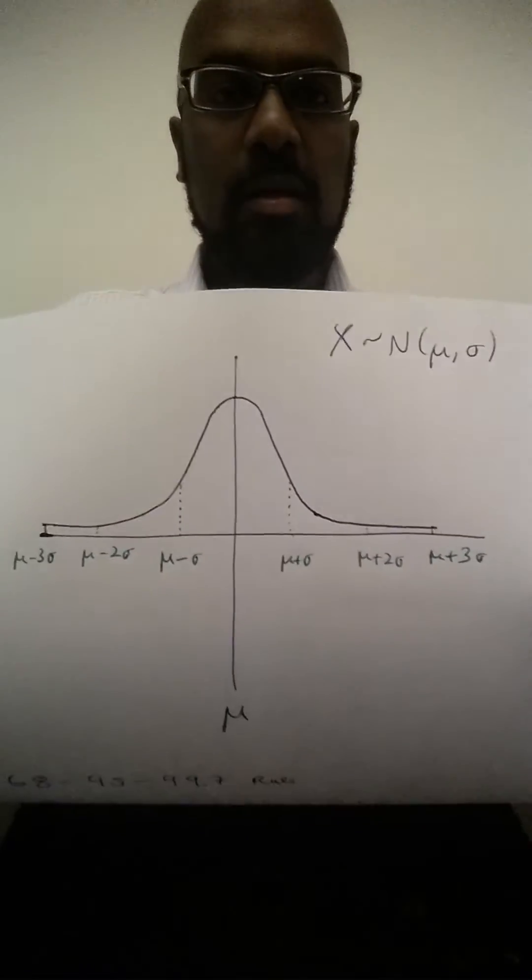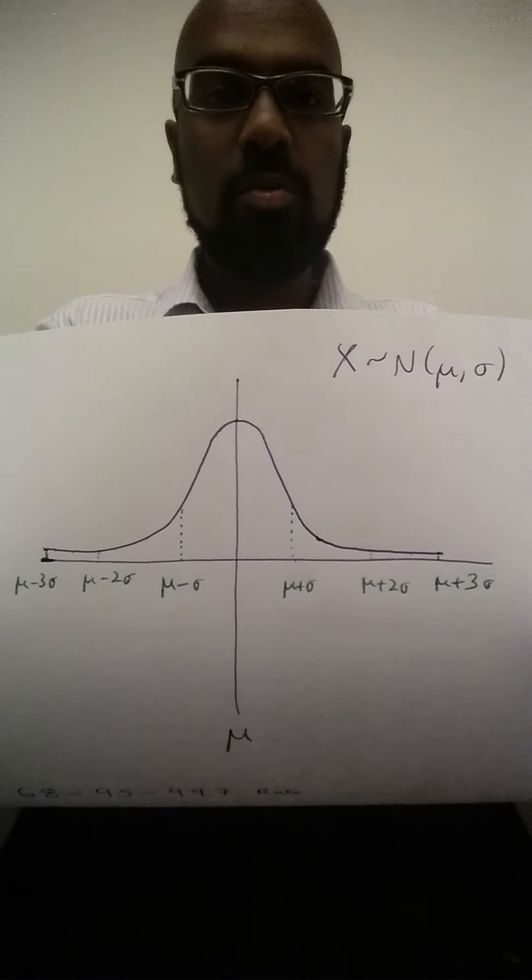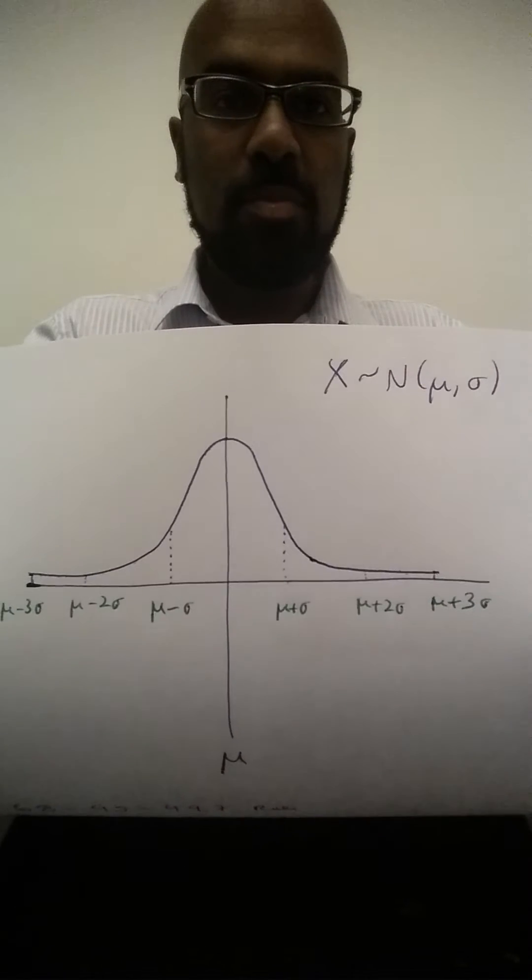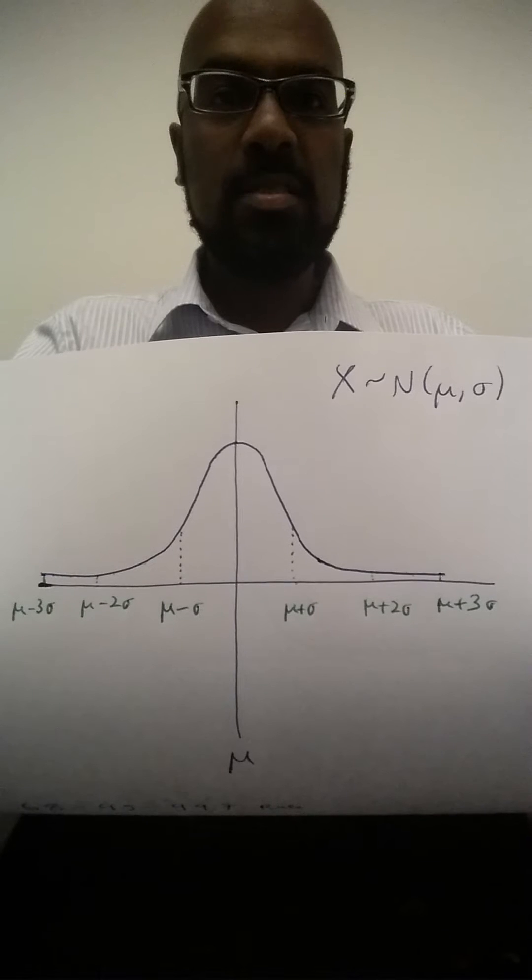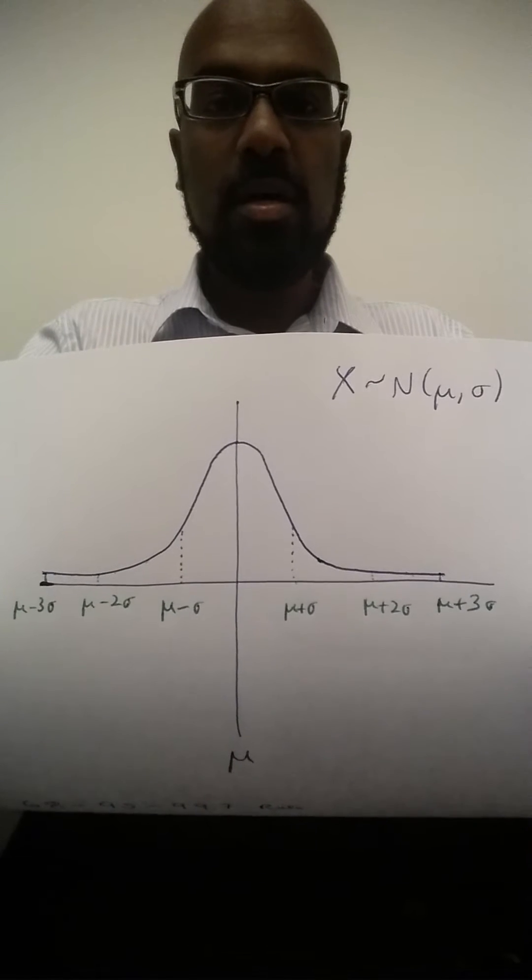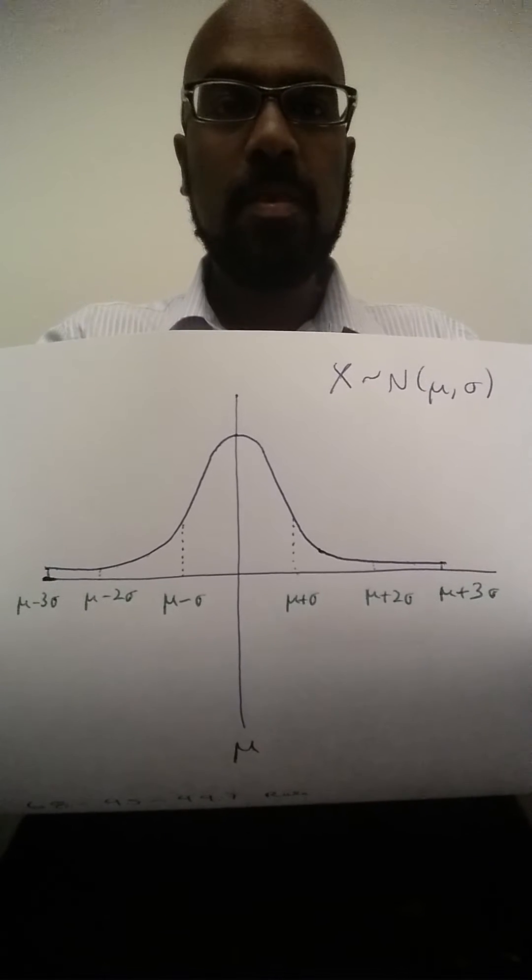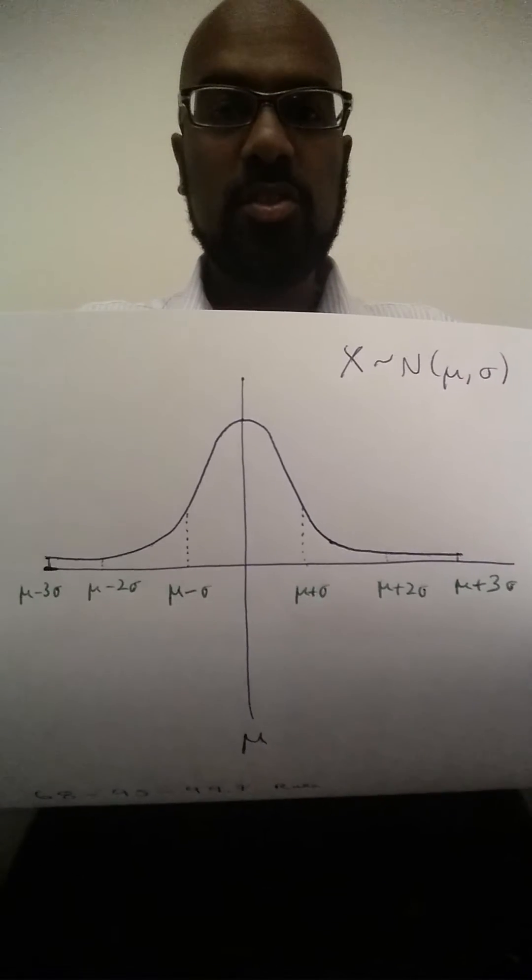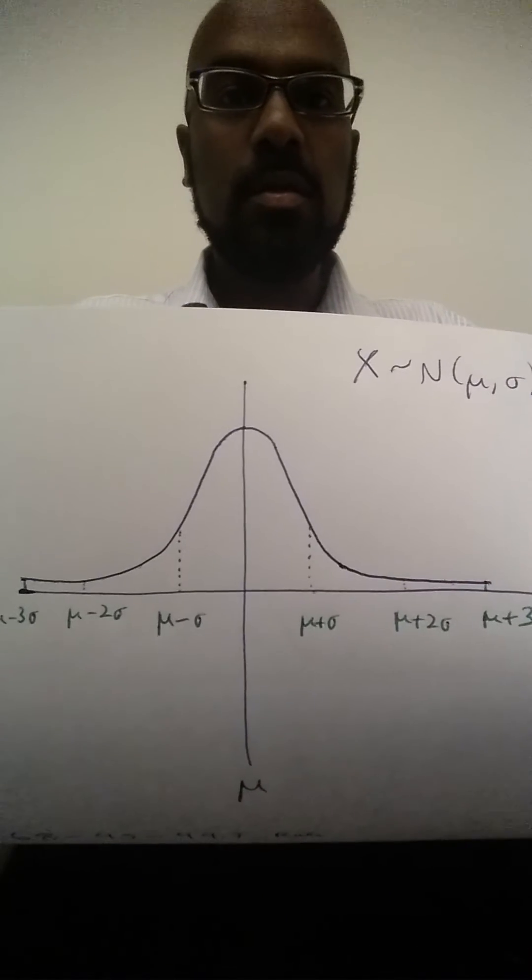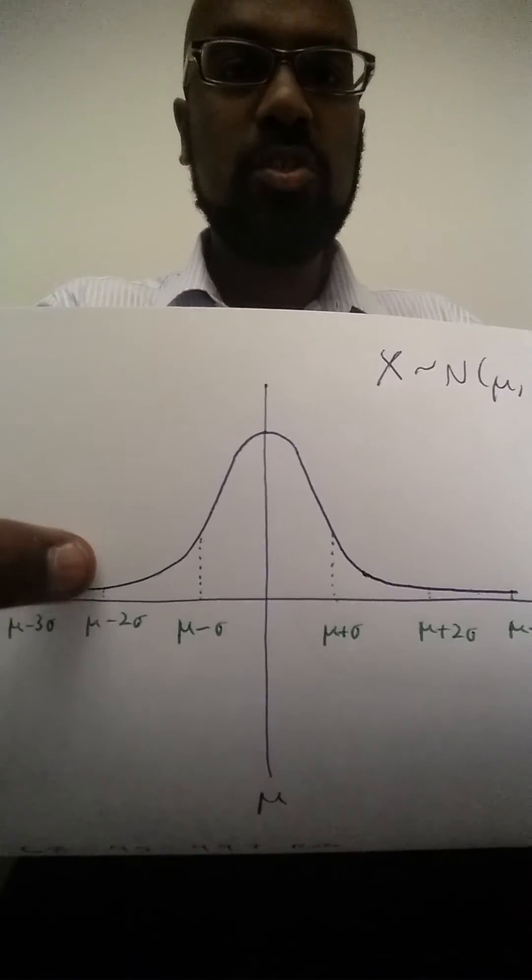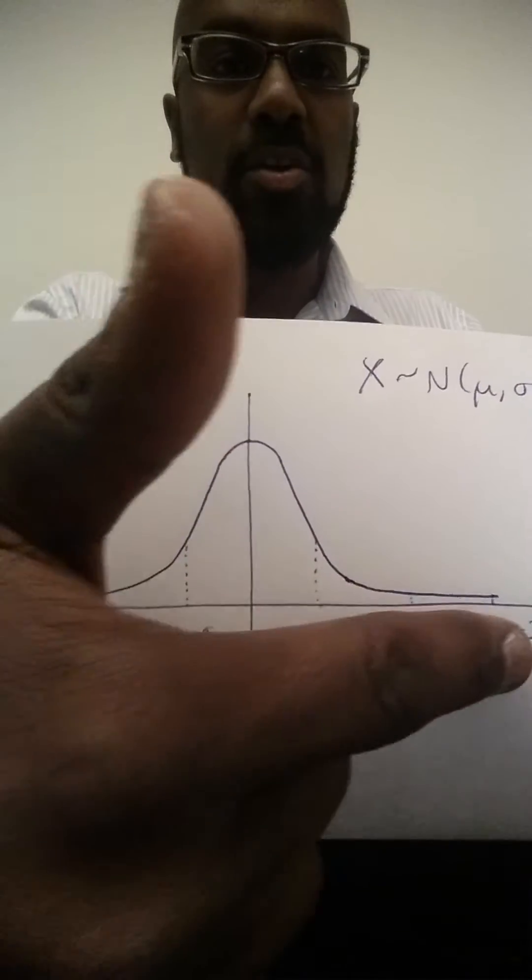Recall that a random variable is normally distributed with mean mu and standard deviation sigma if it follows a particular distribution pattern. There's an explicit formula for this distribution, but to give a diagram, the distribution looks like a bell curve.